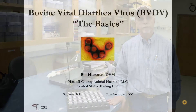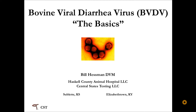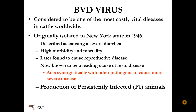BVD virus is considered to be one of the most costly viral diseases we see in cattle worldwide. We originally isolated BVD virus in upstate New York in 1946, and in that clinical presentation it was described as causing a severe diarrhea — hence the name bovine viral diarrhea. We know it causes high morbidity and high mortality. We later found it causes a lot of reproductive diseases, and it is one of the leading causes of respiratory disease. One of the most important aspects is that it produces what we call persistently infected, or PI, animals.